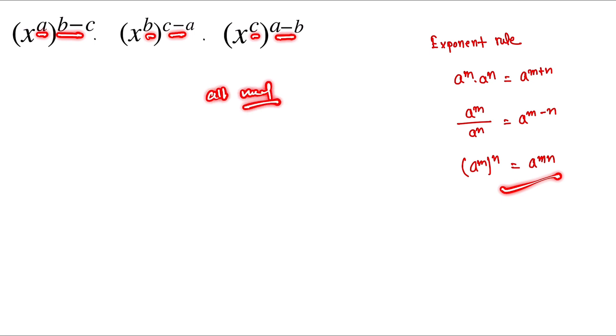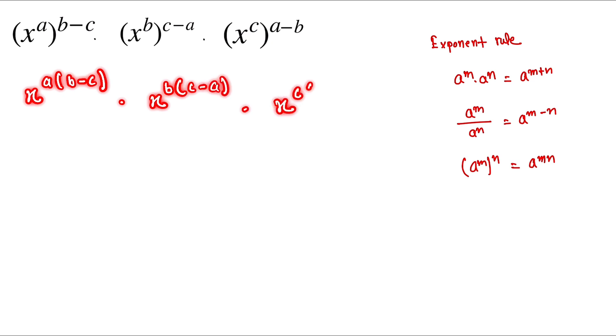The power becomes multiplied. So here is x to the power of a, and this one is multiplied with b minus c. And here is x to the power of b into c minus a. And here is x to the power of c into a minus b.